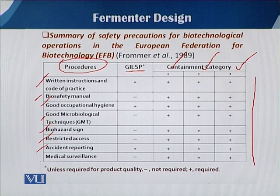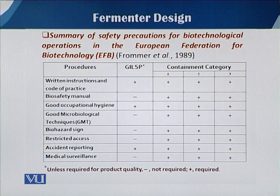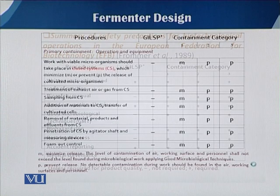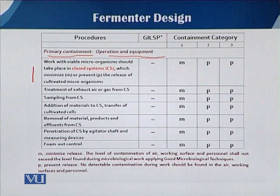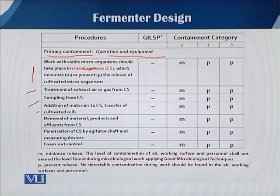By this table, we can easily find out what kind of precautions and procedures we have to adopt to run the fermentation process according to the containment level. For primary containment, work with viable microorganisms should take place in a closed system, with treatment of exhaust air and sampling also conducted in a closed system.